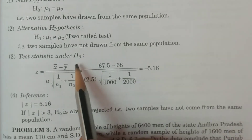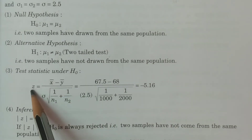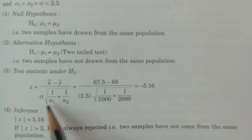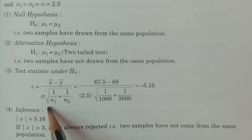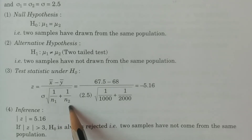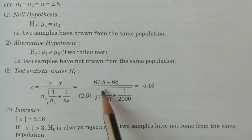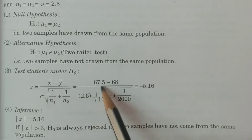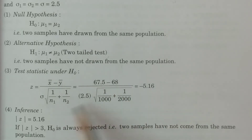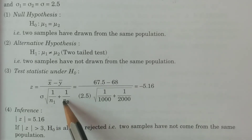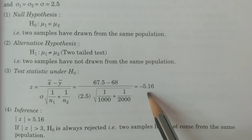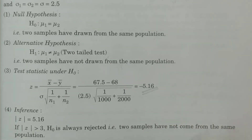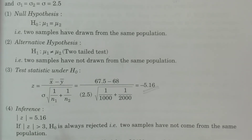The test statistic under H0 is: Z = (X̄ − Ȳ) / (σ × √(1/N1 + 1/N2)). Substituting the values: Z = (67.5 − 68) / (2.5 × √(1/1000 + 1/2000)). Calculate this value — you will get approximately −5.16. You calculate this value to verify whether it is correct.